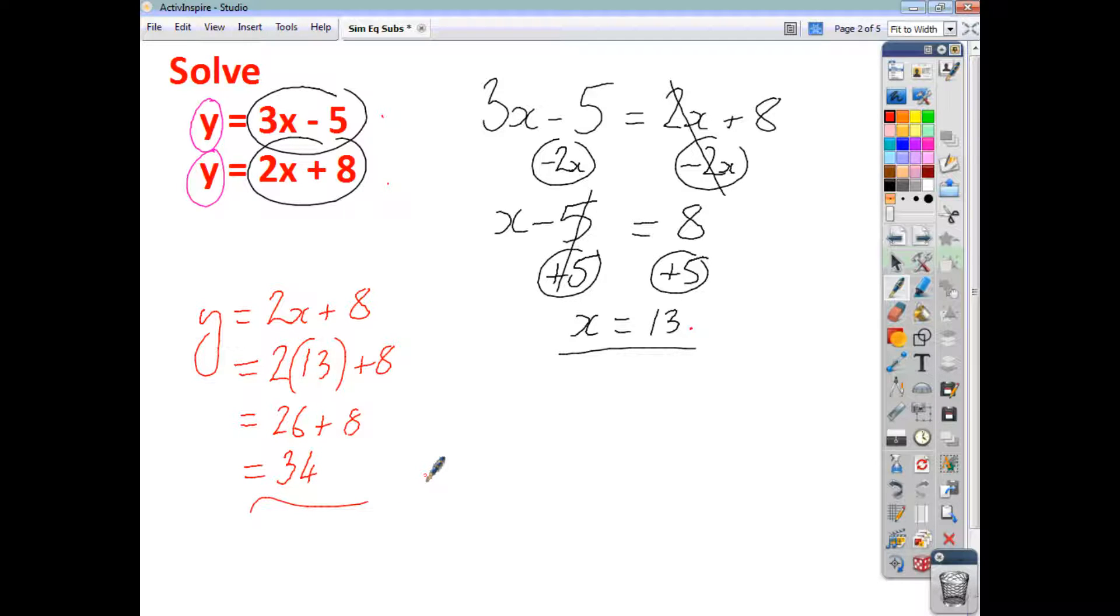Now, you can check to see if that is actually the case with either of these equations. So we've checked that it's the case with the second one. Let's check and see that it works with the first one. So 3 times x, 3 thirteens is 39, minus 5 is 34. So your solution is x equals 13 and y equals 34. Make sure that you have that clearly written down. And remember, the x and the y here, that's the coordinate at which these two lines cross. That's where the two lines are in the same place at the same time.